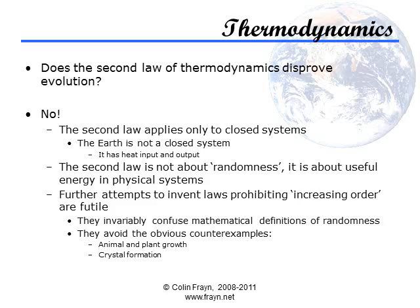The extension of this law leads to the concept of entropy, a word that creationists often throw around as if they understand it, then subsequently demonstrate that they don't. Entropy is a theoretical value calculated in various ways depending on the field, but generally relating to the number of possible states that a system can exist in. In more understandable terms, entropy represents the amount of energy in a system that is available for useful work, and the second law shows us that this quantity can never increase — it can only ever remain the same or decrease.